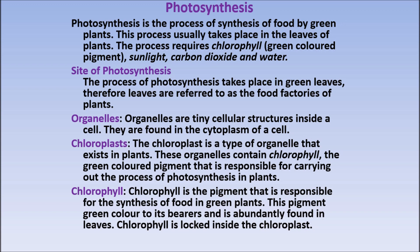Photosynthesis — what is it? It is a process of food synthesis by green plants. Autotrophs prepare food through photosynthesis. This is a process of food synthesis by green plants, through the plants.